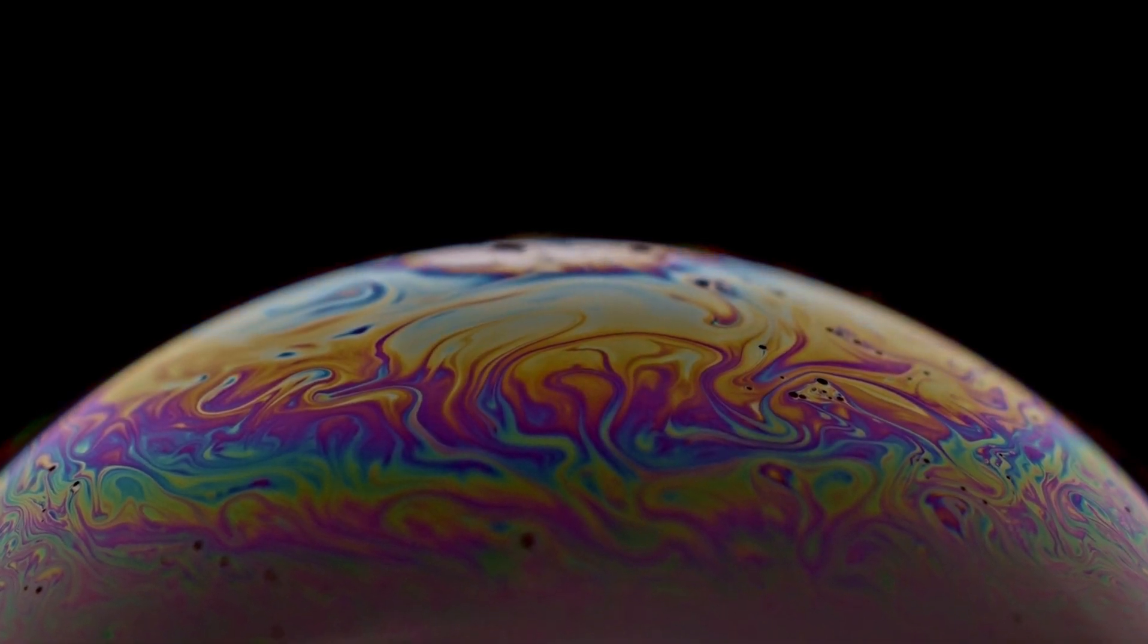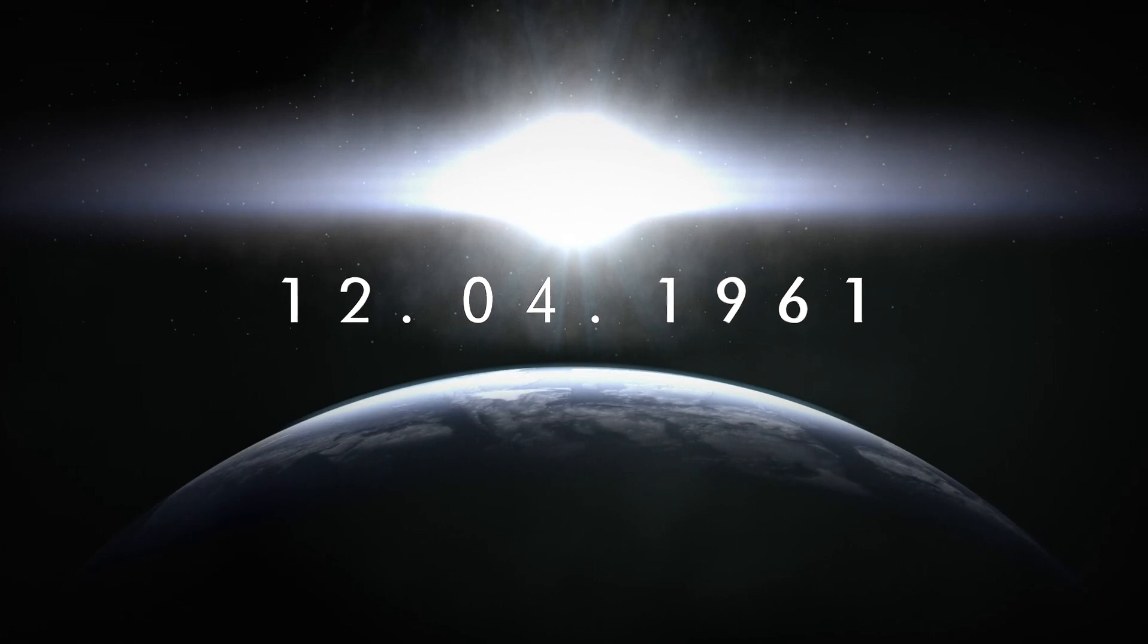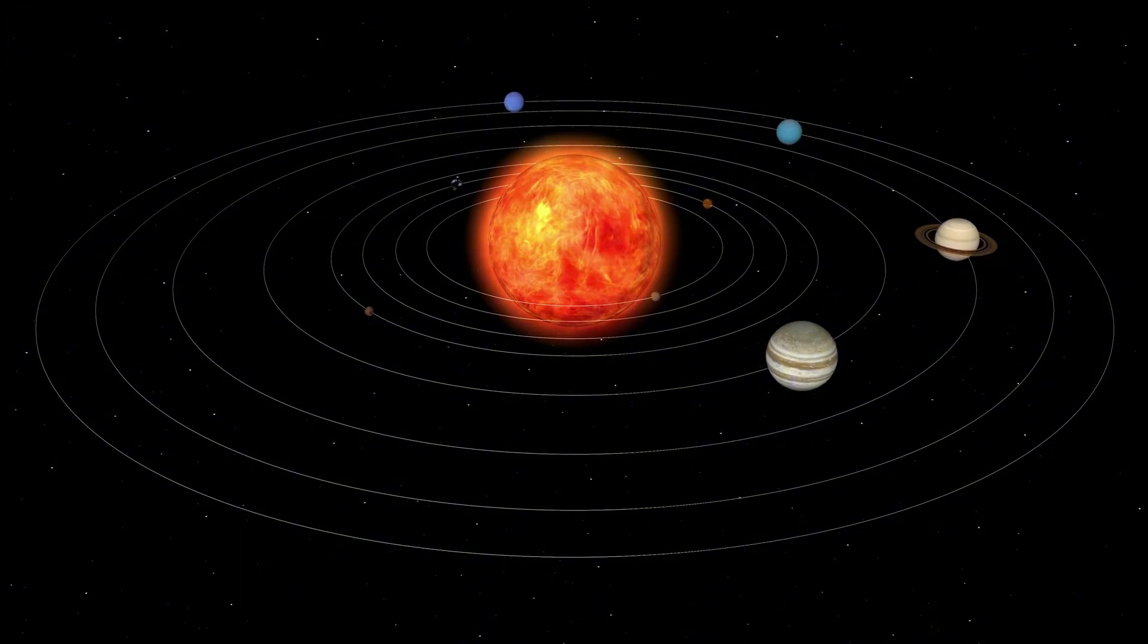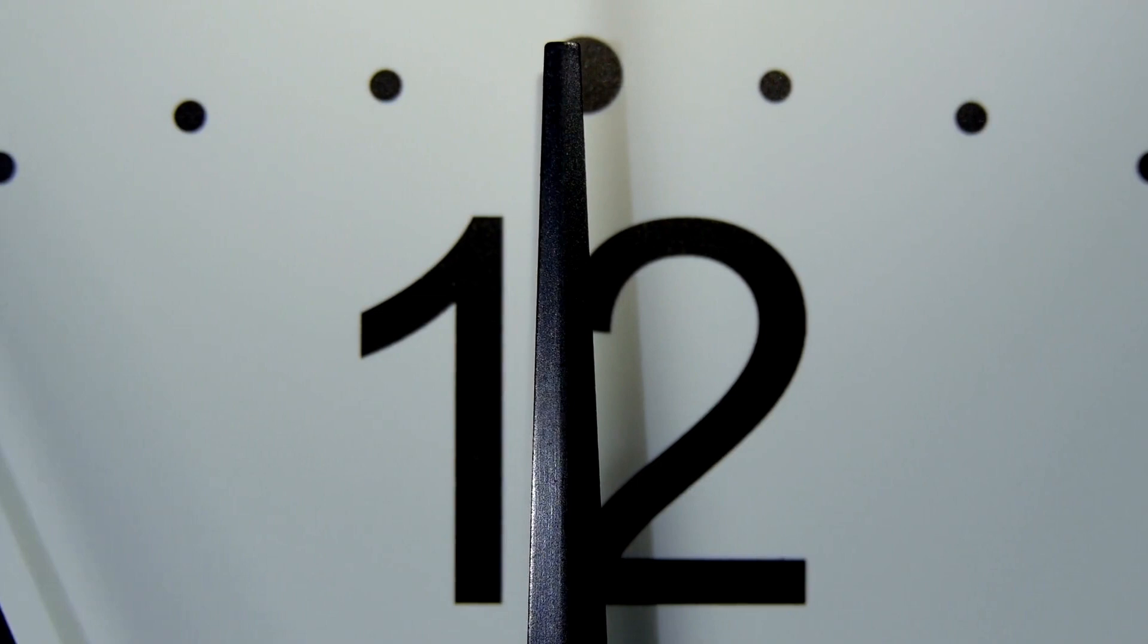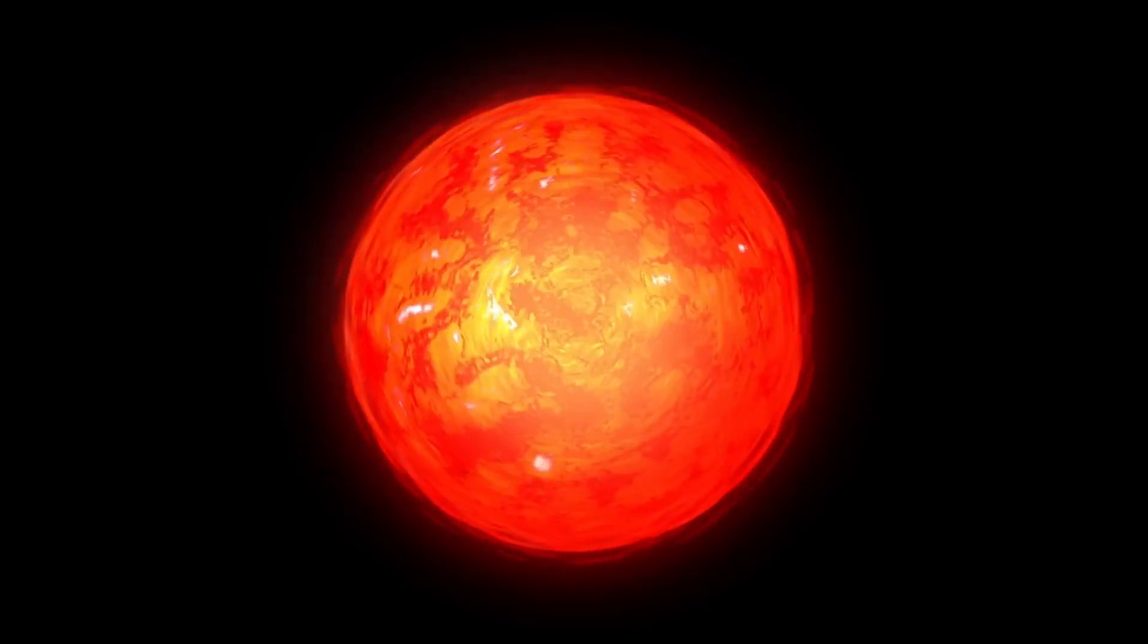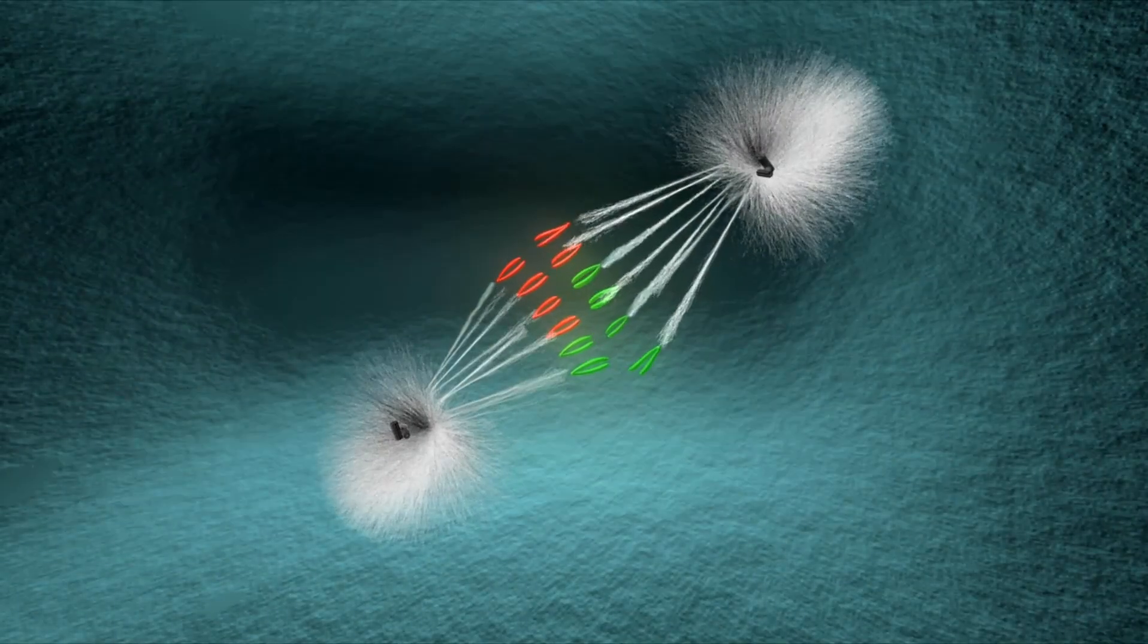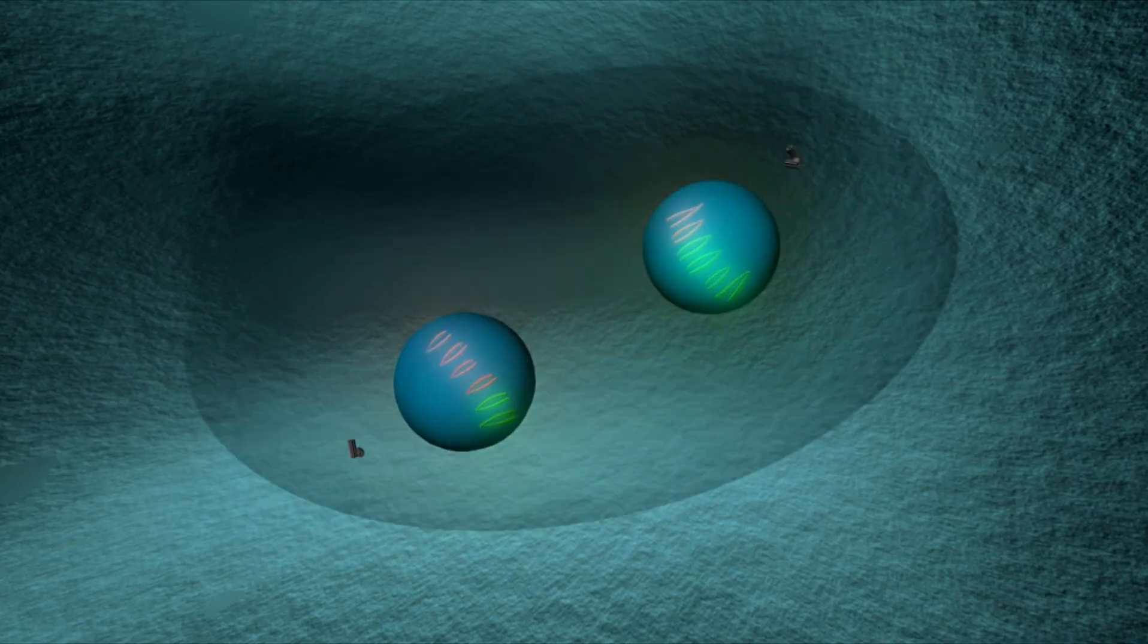For instance, K2-18b orbits in the habitable zone of its host star, a red dwarf known as K2-18. This positioning raises the possibility that the planet's surface might harbor liquid water, similar to Earth's oceans. However, it is important to note that K2-18b orbits its star much closer than Earth orbits the Sun. While Earth is about one astronomical unit (AU) from the Sun, K2-18b is only 0.18 astronomical units from its star, which is closer than Mercury's orbit around the Sun. This means that a year on K2-18b lasts only 13 Earth days.